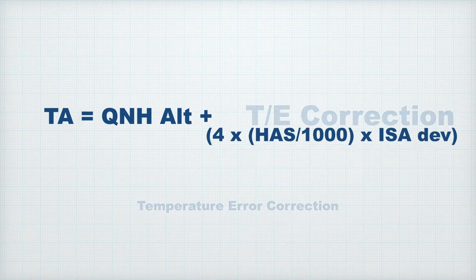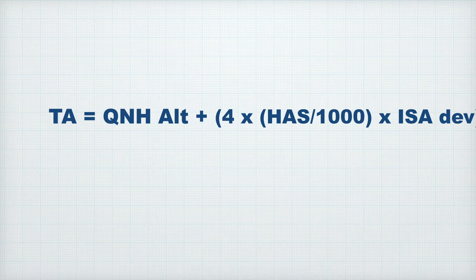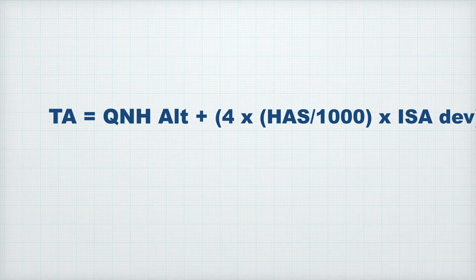So that's a formula that we understand for temperature error correction, and we can insert that into our true altitude formula to give us something like this. True altitude equals our indicated altitude (QNH based) plus 4 times the height above the surface over 1000 times our ISA deviation. This is definitely one to write down. This is definitely a formula to know, understand, practice, and if you can get this, it unlocks your ability to do these true altitude questions.